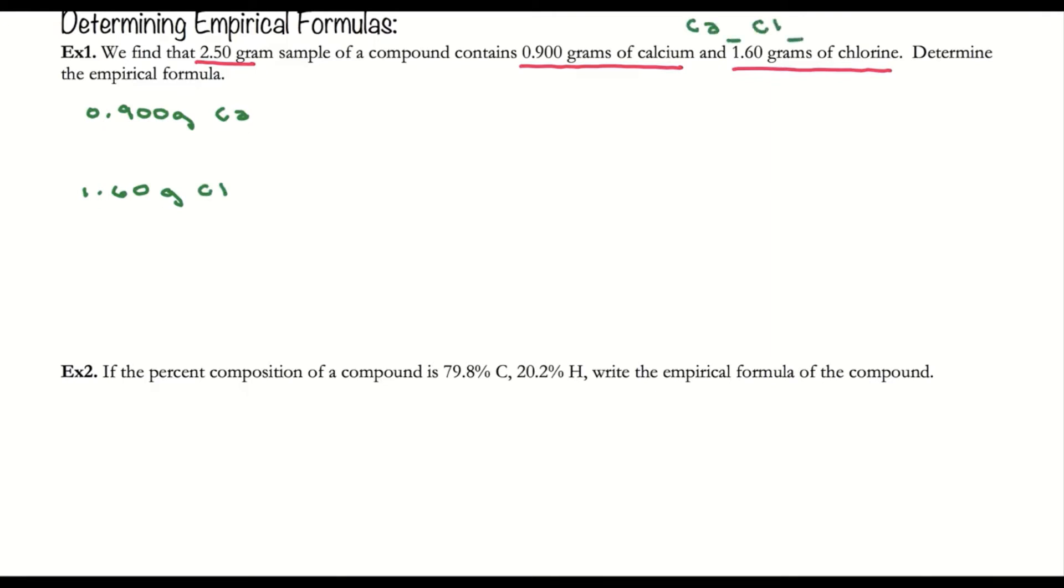When you write a formula, I know it's going to be Ca something Cl something, and my goal is to determine what those subscripts are. Those subscripts are simply the ratio of number of moles of calcium and chlorine. I need to convert my mass into moles. I've got grams on bottom, moles on top.